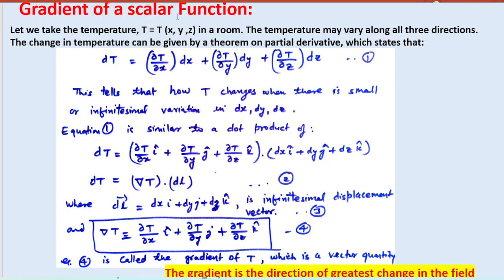In Cartesian coordinates, del is written as: del = (∂/∂x) î + (∂/∂y) ĵ + (∂/∂z) k̂. When this operator del operates on a scalar function, it is known as the gradient. As an example, consider temperature T which depends on coordinates x, y, z in a room — the temperature may vary along three directions. The change in temperature can be given by the theorem of partial derivatives: dT = (∂T/∂x)dx + (∂T/∂y)dy + (∂T/∂z)dz.